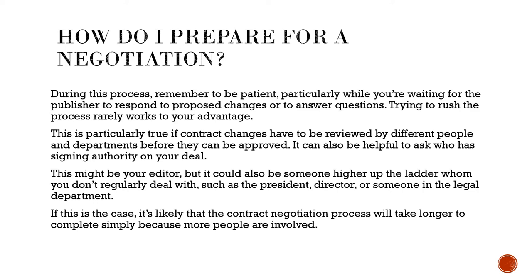During this process, remember to be patient, particularly while you're waiting for the publisher to respond to proposed changes or to answer questions. Trying to rush the process rarely works to your advantage — this is particularly true if contract changes have to be reviewed by different people and departments before they can be approved. It can also be helpful to ask who has signing authority on your deal. This might be your editor, but it could also be someone higher up the ladder, such as the president, director, or someone in the legal department. If this is the case, the contract negotiation process will likely take longer simply because more people are involved.